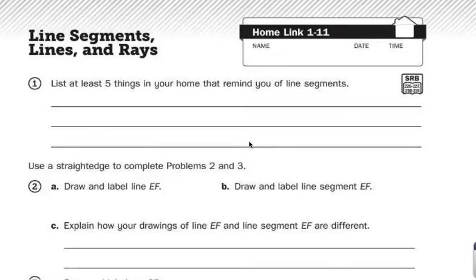Homelinks 1-11 is all about line segments, lines, and rays. You should be looking in your journal so that you have some ideas about things to help you. You can also look at the little cheat sheet that we made with all the pictures of line segments, lines, and rays.